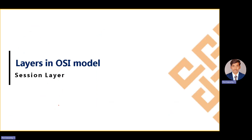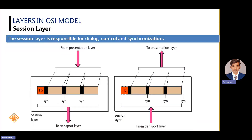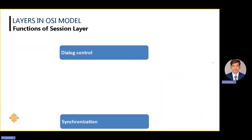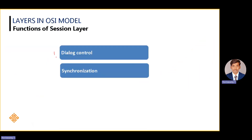The session layer, presentation layer, and application layer are all user interface layers. The session layer receives data from the presentation layer, records the timestamp, and sends the data to the transport layer. Its main functionality is dialog control — tracking at what time data is sent and received, and ensuring synchronization.